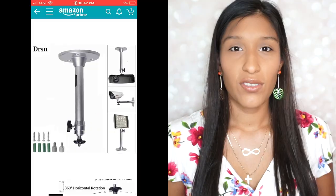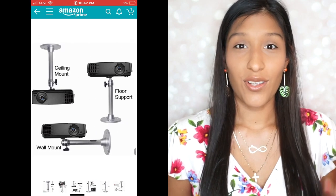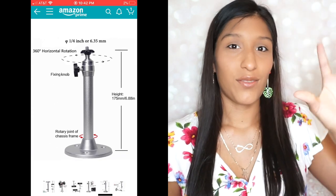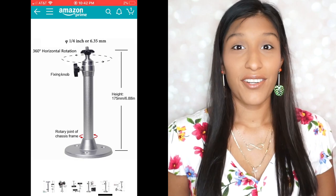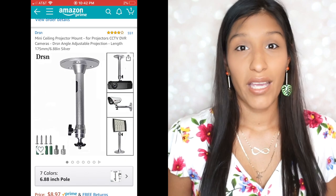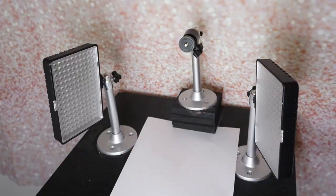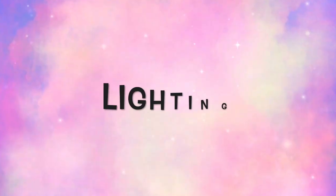What I use are projector holders — they're meant to hold projectors off the ceiling. You screw it to the ceiling and the hanging part holds the projector, but I found them perfect for my setup. They come in different sizes; I got the shortest one because the closer the light is to the nail, the better. Just move it around a bit so it's not super bright and you can't see what you're doing.